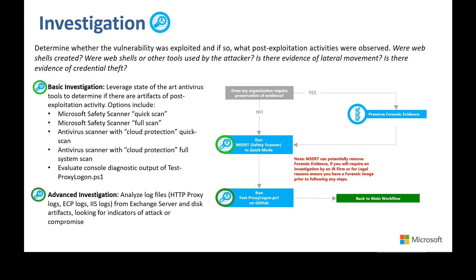Once you've determined the results of the Test-ProxyLogon script and the MSERT quick scan, you should run MSERT in full scan mode against all drives in the Exchange system — this can take several hours or even a day. An advanced investigation will consist of reviewing the HTTP proxy, ECP, IAS, and event logs from the Exchange server, and likely looking at disk artifacts for indicators of compromise such as web shells or malicious code being utilized on the system.